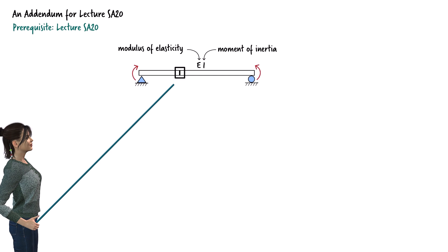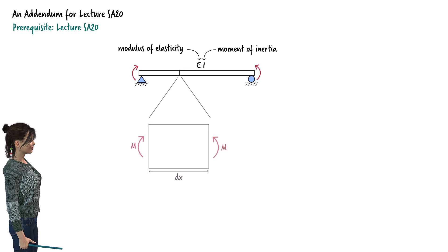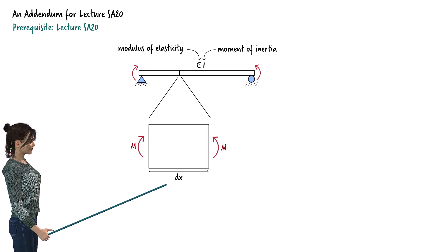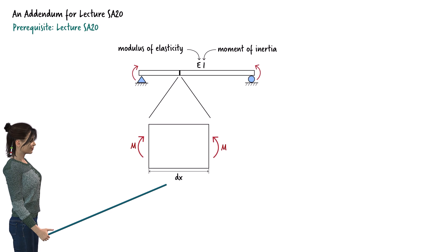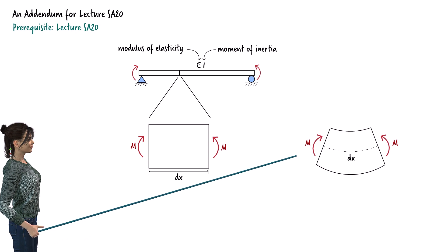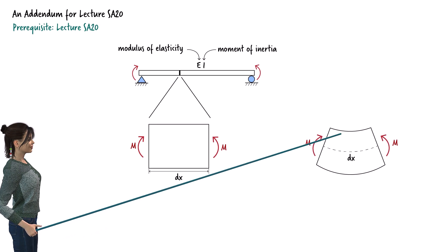Let's focus on an infinitesimal segment of the beam. Here is a magnified view of the segment. The infinitesimal width of the segment is denoted by dx. Under the bending moment, the segment deforms like this.